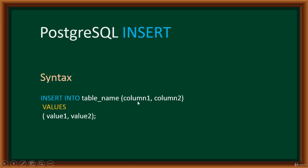The value list must be in the same order as the column list specified after the table name. If column one is an integer and column two is a string, the values must correspond in the same order with matching data types. You can insert one row at a time or insert multiple values at once.